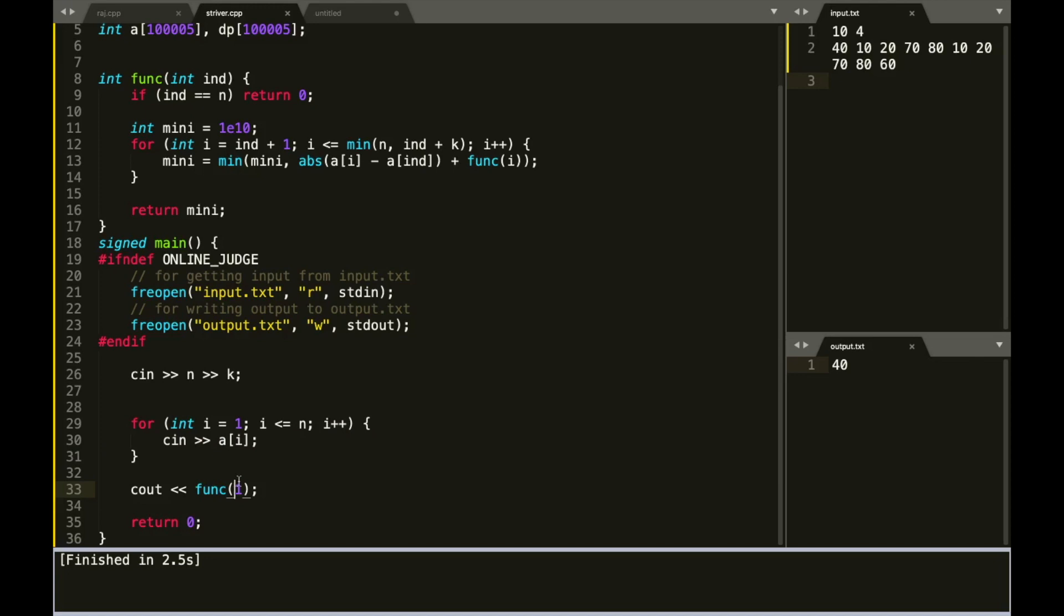Then I've taken the array as the input. I've called this function with 1. Why? Because that is the first index where we start from.